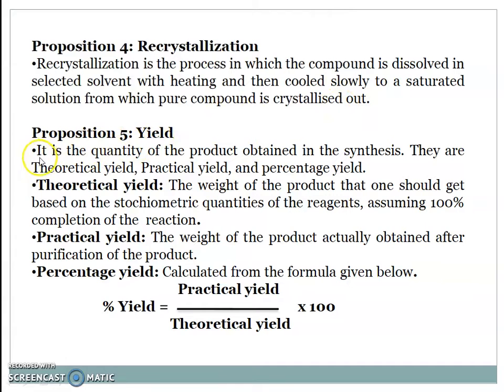Proposition 5: Yield. It is the quantity of the product obtained in a synthesis, and they are theoretical yield, practical yield, and percent yield. Theoretical yield: the weight of the product that one should get based upon the stoichiometric quantity of the reagents, assuming 100% completion of the reaction.